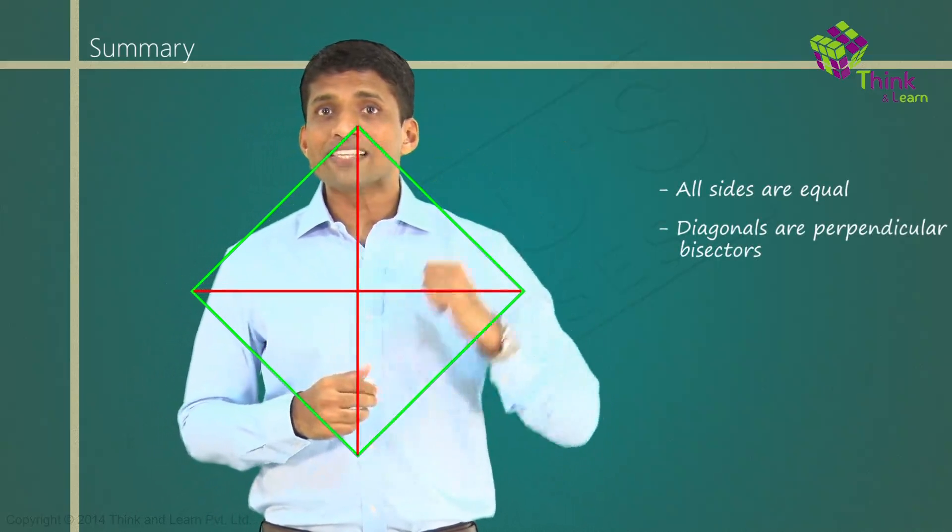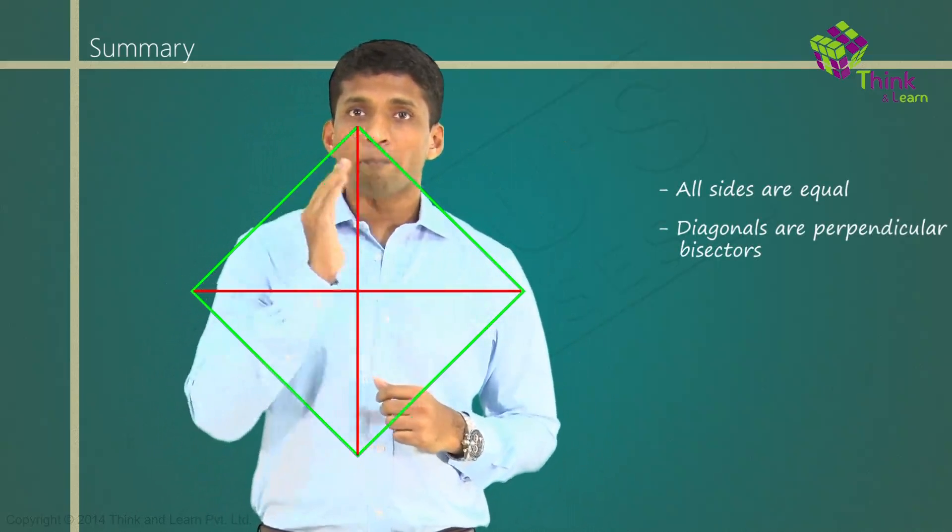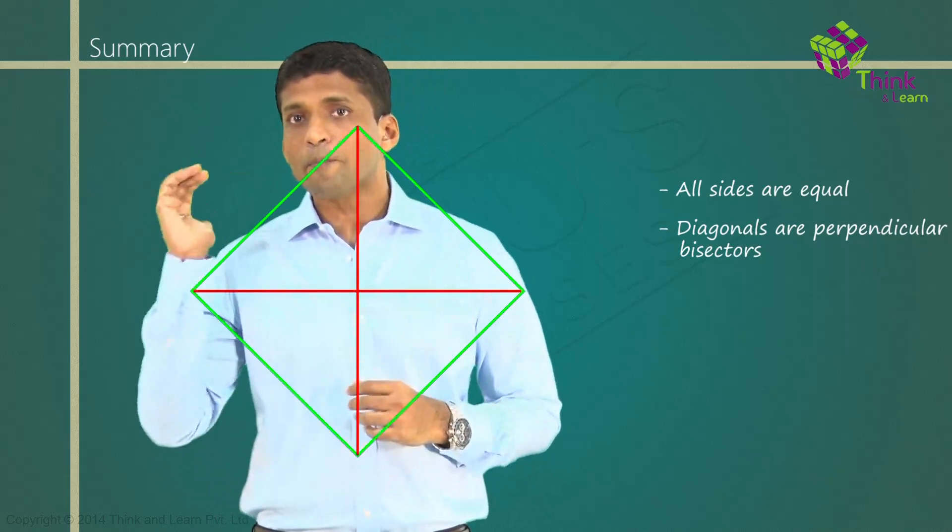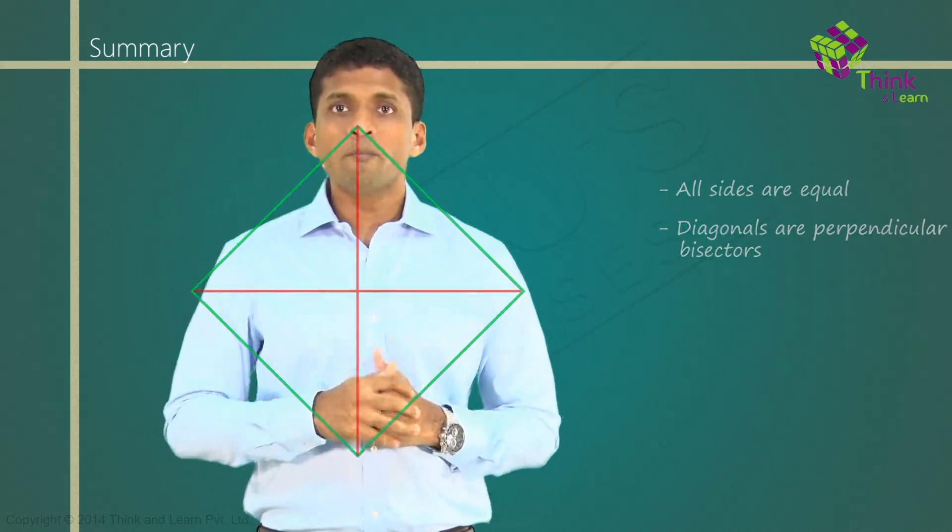because in a parallelogram, diagonals bisect each other, and in a kite, they are perpendicular to each other. So together, it will be perpendicular bisectors. So that's about rhombus.